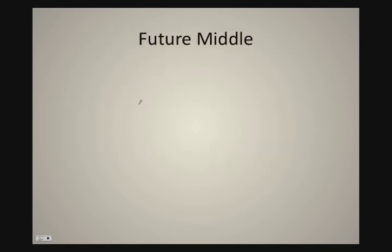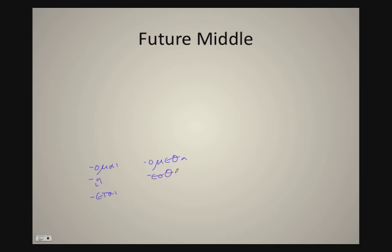On to an example. We're going to take our second principal part, or our stem plus sigma, and we're going to add our primary endings: omai, e, etai, omatha, este, ontai.